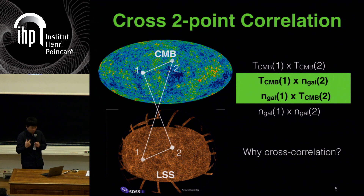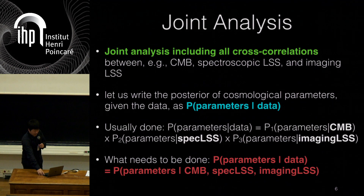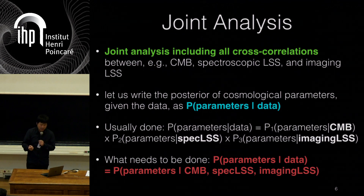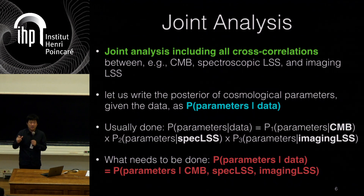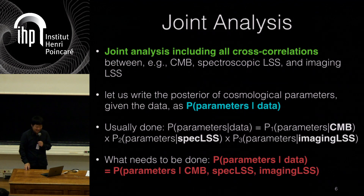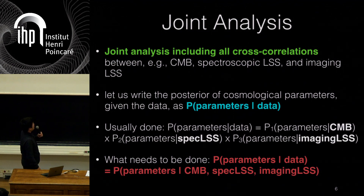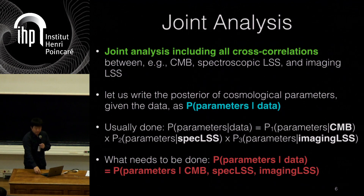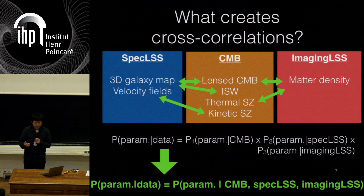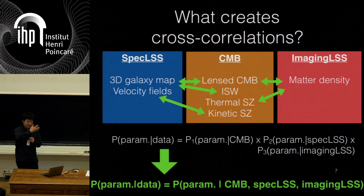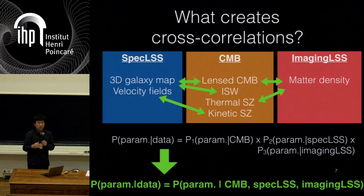But when the datasets do have correlations, you have to include them — you can't just ignore them. There's information in there. In joint analysis, everybody knows: given the data, you want to get the posterior for the parameters. But in many cases, what people do is just multiply the posteriors of individual datasets, never including the correlations. So what I'm saying is basically fairly trivial: when you try to do parameter estimation given the datasets, you do the joint analysis over all datasets. That's the philosophy of 3x2pt analysis. You have spectroscopic LSS, imaging LSS, lensing, and CMB — all sorts of physical ways that cross-correlations should arise. You just can't ignore them.